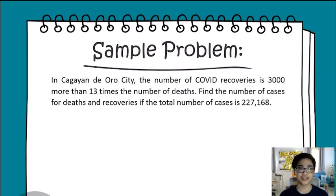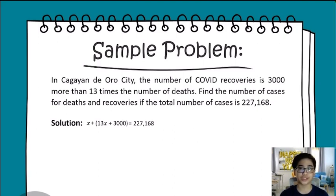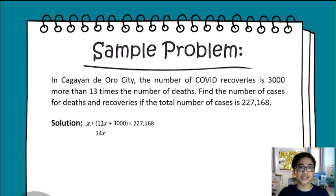To solve this, we must find the number of death cases by finding the value of x from the equation: x + 13x + 3,000 = 227,168. Remember to simplify the like terms in the equation. Let's combine x and 13x, which gives us 14x, then copy the rest of the equation.